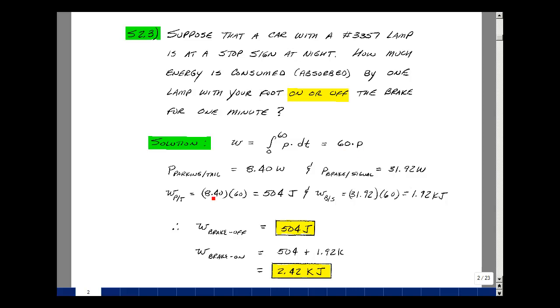Now in supplemental problem 2, we found that the parking tail light filament absorbed about 8.4 watts when the ignition was on, and that the brake and signal filament was absorbing 31.92 watts.